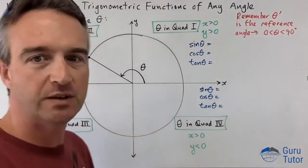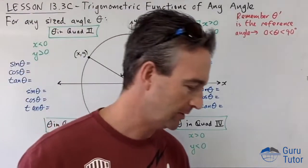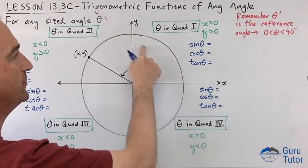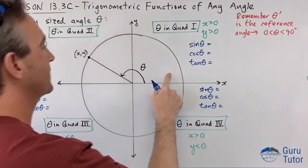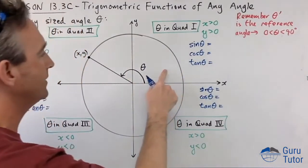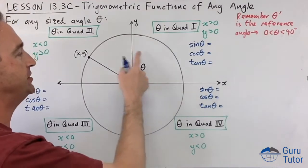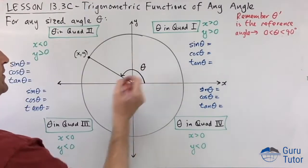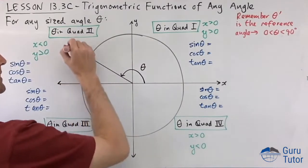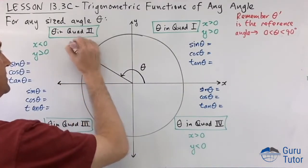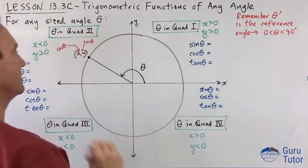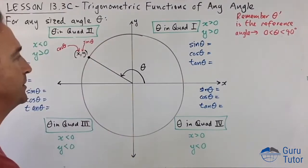We're going to figure out what sine, cosine, and tan equal for any angle. When we've got an angle theta in standard position, there's a point (x, y) on the terminal arm. Whatever theta is, the x coordinate is always cosine theta and the y coordinate is always sine theta.